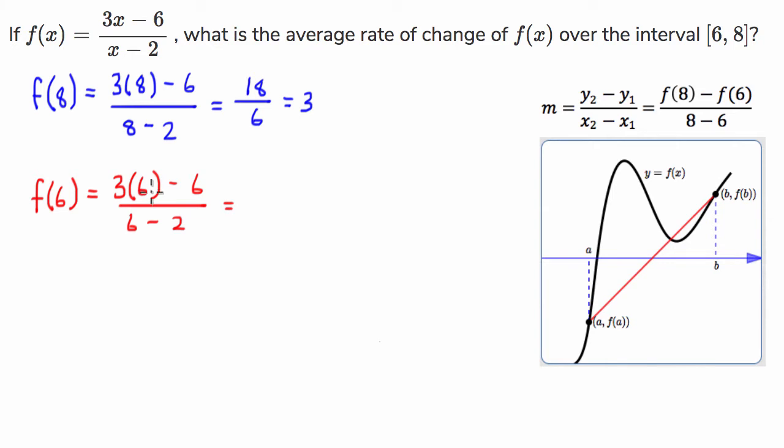Then we're going to find the function at 6, and we get 3 times 6 minus 6, over 6 minus 2. 3 times 6 is 18, minus 6 is 12, over 6 minus 2 is 4, which is equal to 3.